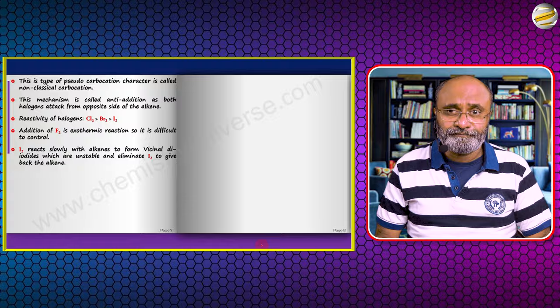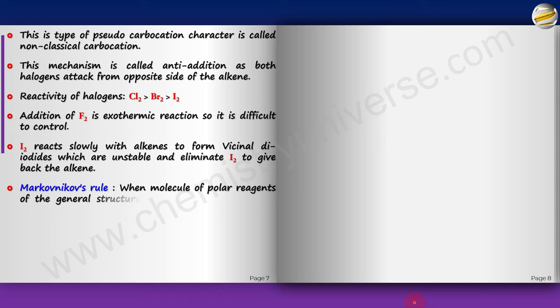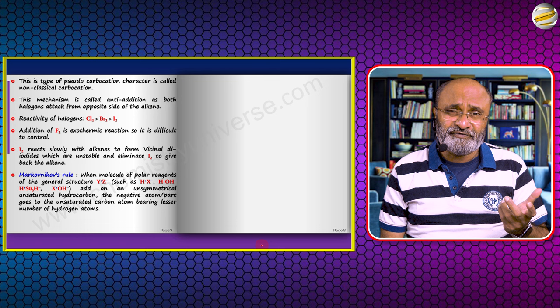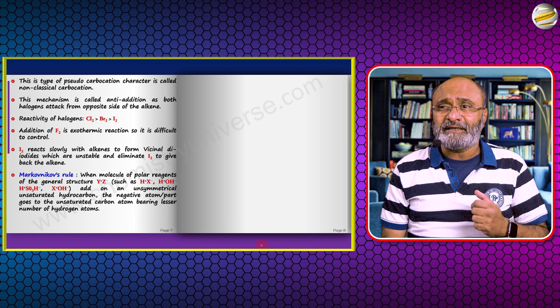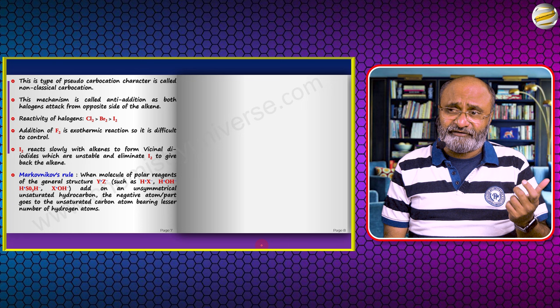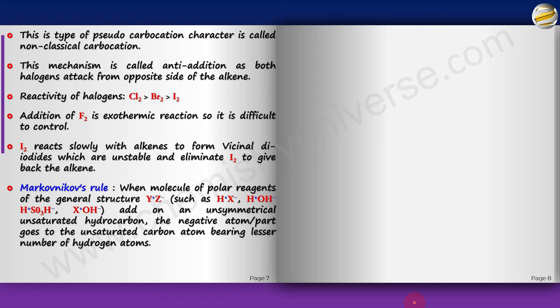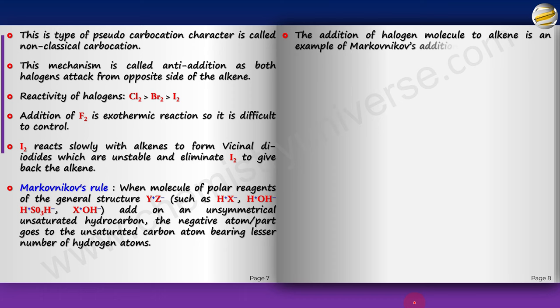The addition of halogen molecule to an alkene is an example of Markovnikov addition. Since the addition is anti, I want you to pause the video, add bromine anti — one from top, one from bottom — and make the Fischer projection of the product. The answer: turning the alkene, one carbon attacked by Br from the bottom and the other from the top gives a sawhorse. Bringing both CH3 groups down yields a Fischer projection that is not a meso compound — it is optically active. You get both enantiomers because the attack could be reversed, giving the mirror image.